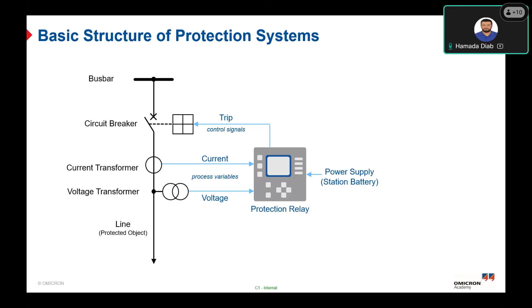The heart of every protection system is the protection relay. The task of the protection relay is to monitor the threshold values of the representative process variables — current and voltage — and then to react on them properly, often in combination with a time delay.